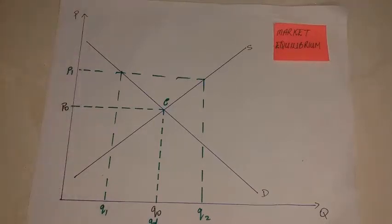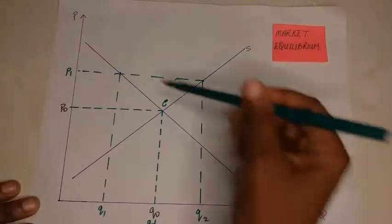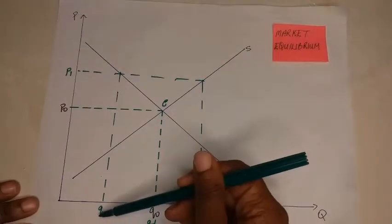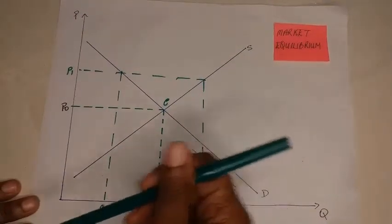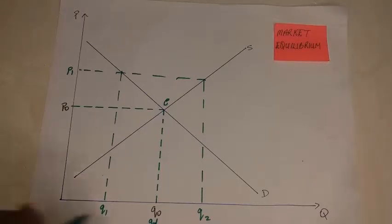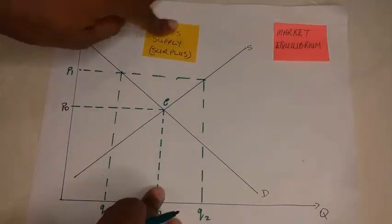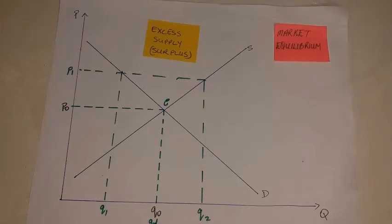So what is going on here? Our quantity supplied, which is q2, is greater than our quantity demanded. When we have a situation where quantity supplied is greater than quantity demanded, we call that excess supply — it's known as a surplus. Sometimes you would hear 'glut' — there's a glut in the market, meaning there's too much being supplied.